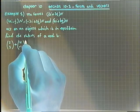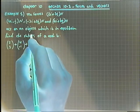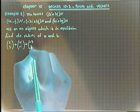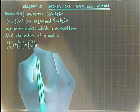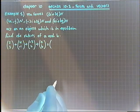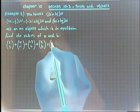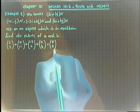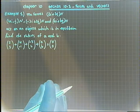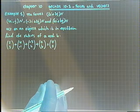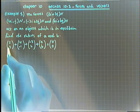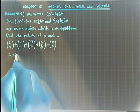The coefficient of i and j represent the x and y components of each vector. Since the sum of all forces must equal zero, the sum of the i components must equal zero, as well as the sum of the j components. So the addition of all four i components must equal zero.